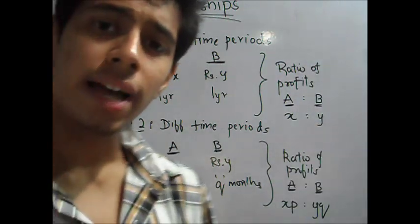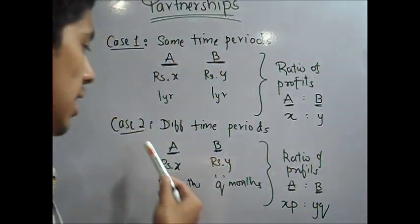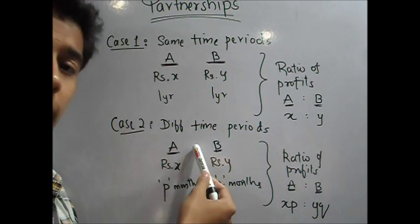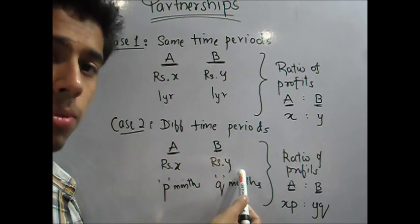You can also have that they both invest different amounts of money for different amounts of time. That is case 2. Case 2 is different time periods. A has invested rupees X for only P amount of months and B has invested rupees Y for Q months.